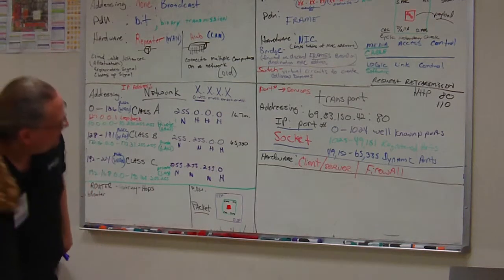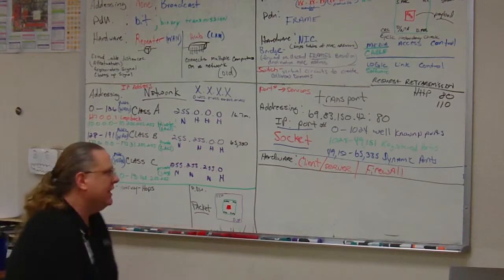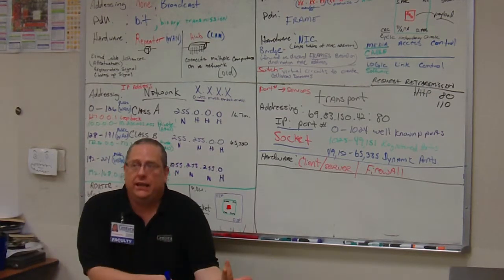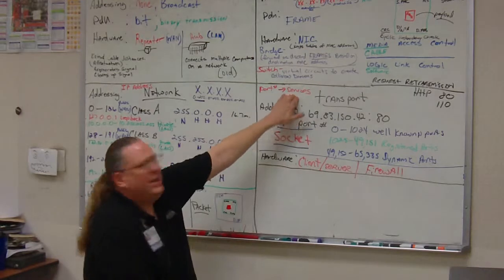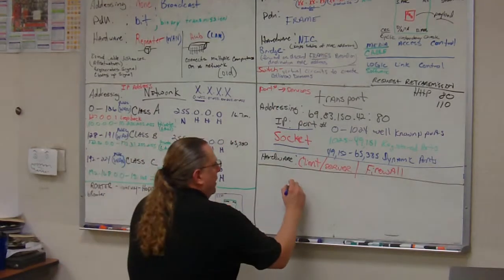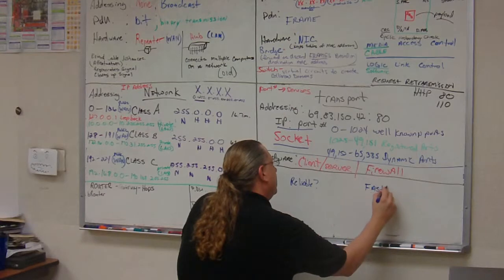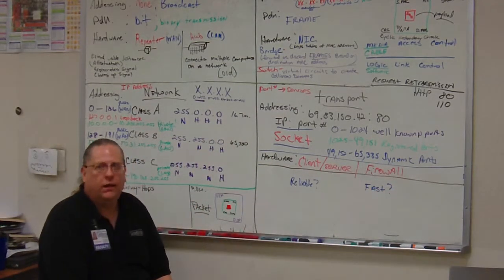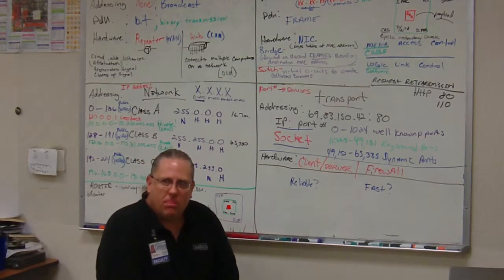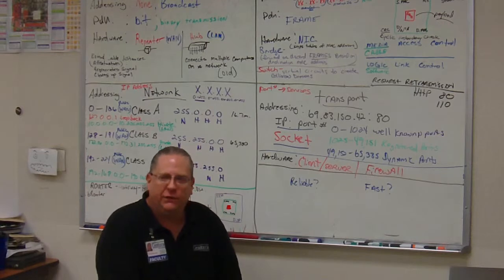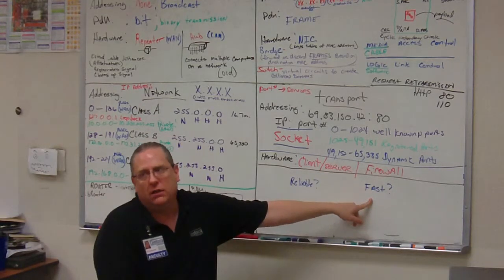Now for the protocol data unit at the transport layer — what does data look like here? It's a bit more complex because there are two answers depending on the type of service needed: do you need a reliable service or a fast service? You can't really combine them, because one has error checking and the other doesn't. If you have error checking to ensure everything sent is received correctly, it won't be as fast, but it will be reliable.